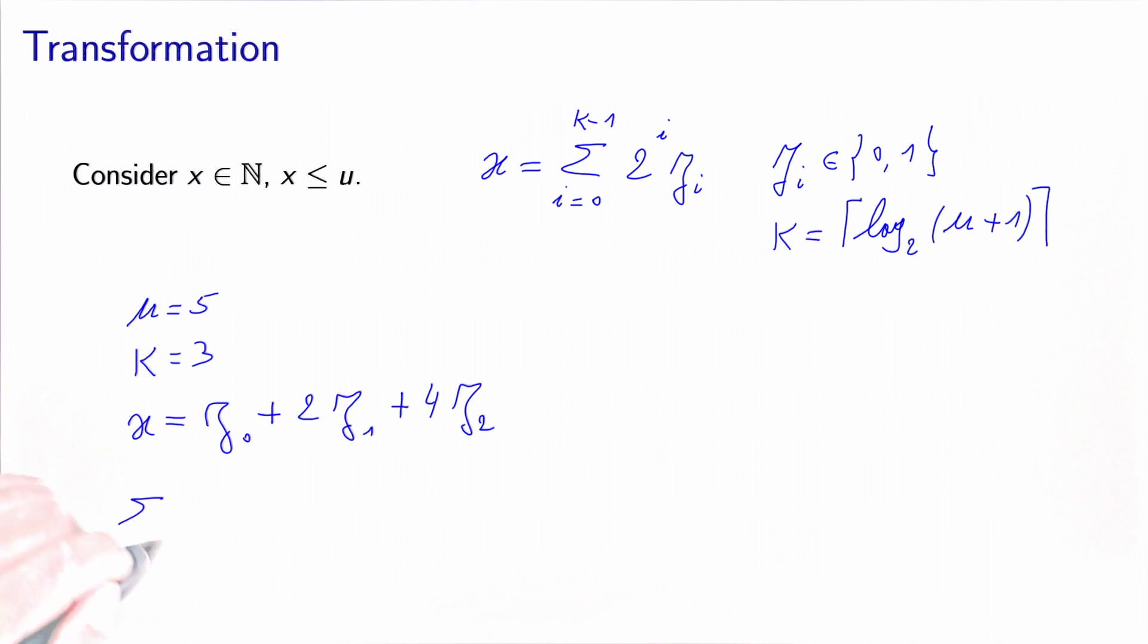And then we need to impose the fact that the sum over i of 2^i z_i must be less or equal to u.